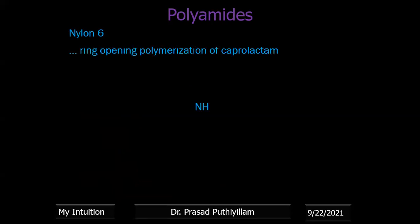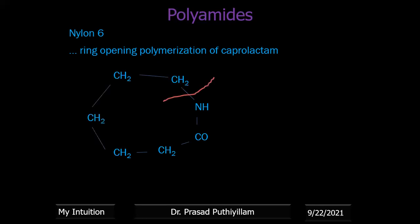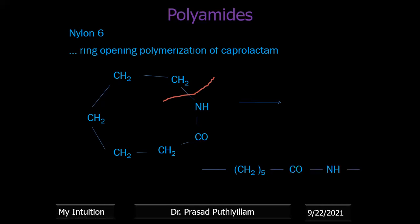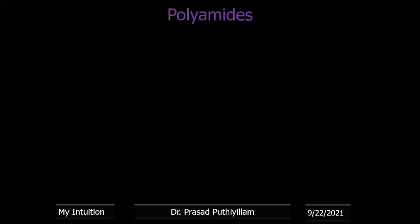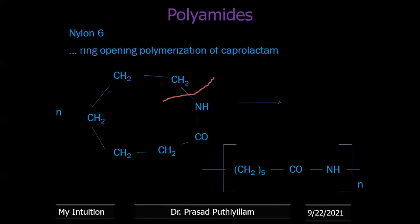Nylon 6 is prepared by ring opening polymerization of caprolactam. The caprolactam structure is a ring with five CH2 groups and one CO-NH group. On ring opening polymerization of n molecules, we get the repeating unit –(CH2)5–CO–NH–, which is nylon 6. The monomer has 6 carbon atoms — hence the name nylon 6.